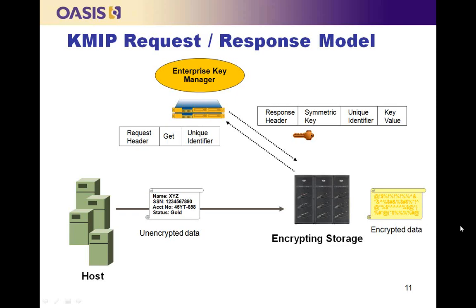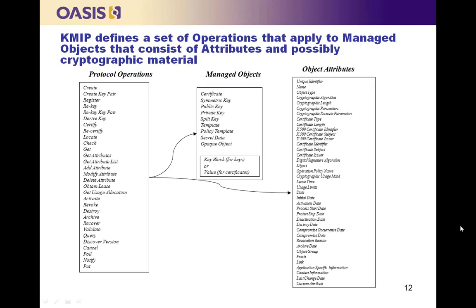We established a common format for messages that enabled clients and servers to express the objects, attributes, and operations requested. A request for a specific key might include the unique identifier for the key; the response would include the key value used for encryption or decryption. The request can also return other information, such as that it is a symmetric key. KMIP defines a set of objects, operations, and attributes within this request-response model, including symmetric keys, asymmetric keys, and certificates.